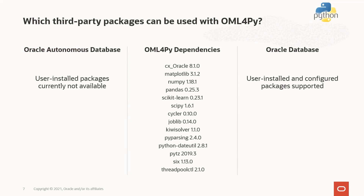Which third-party packages can be used with OML4Py? In both Autonomous Database and Oracle Database, OML4Py has dependencies on packages including CxOracle, Matplotlib, NumPy, Pandas, Scikit-Learn, and SciPy, with others as fourth-party dependencies. The ability for users to install additional third-party packages is available in OML4Py for Oracle Database, but not for Autonomous Database today. However, this is a high priority item on the product roadmap.